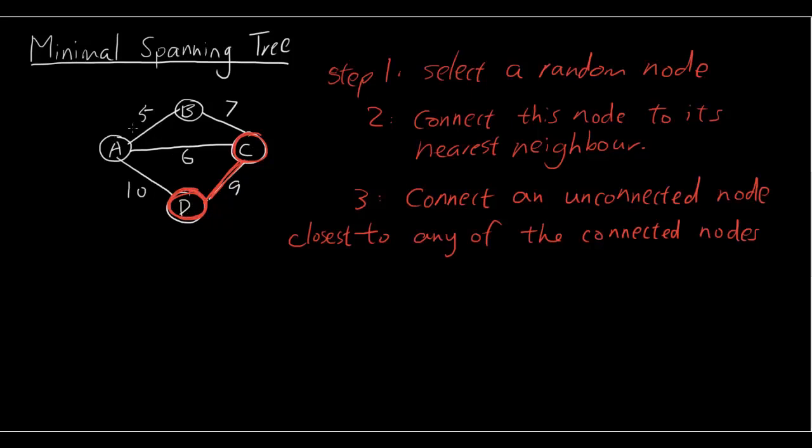And we're going to look at A and B and see which one is closest to either C or D and we're going to connect it up. So A is 10 units away from D, 6 units away from C, B is 7 units away from C so 6 is the smallest number and we're going to join that up to C.